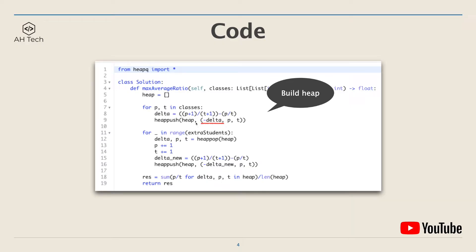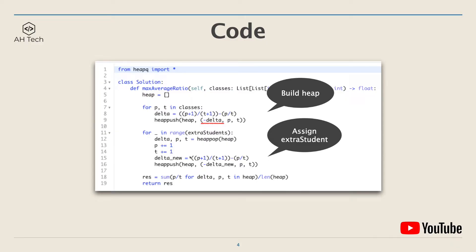We use negative delta because the heap in Python is by default a minimum heap, and we want to keep track of the highest delta class. In this way, the class with the highest absolute delta will be pushed to the front of the heap. Next, we start to assign the extra students: pop the first item from the heap, assign the extra student, calculate the new delta after assigning, and push it back into the heap — because we are able to assign multiple extra students to the same class.